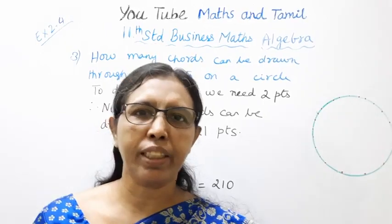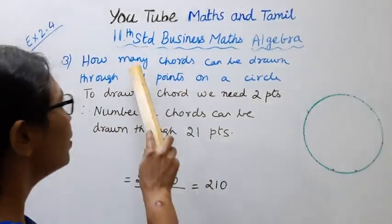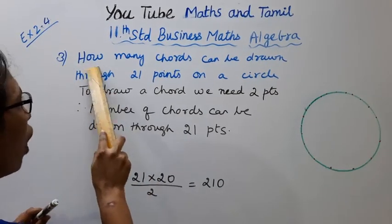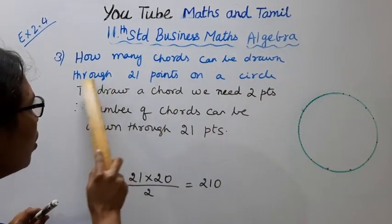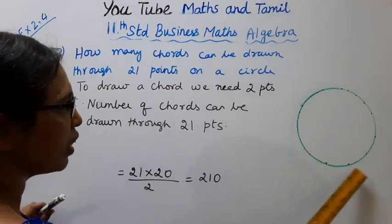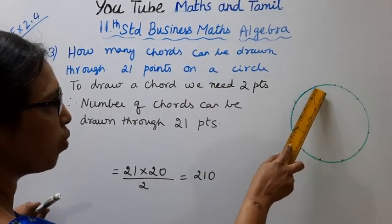Hello students, welcome to Maths and Tamil channel. 11th Standard Business Maths Algebra, Exercise 2.4, question 3: How many chords can be drawn through 21 points on a circle?